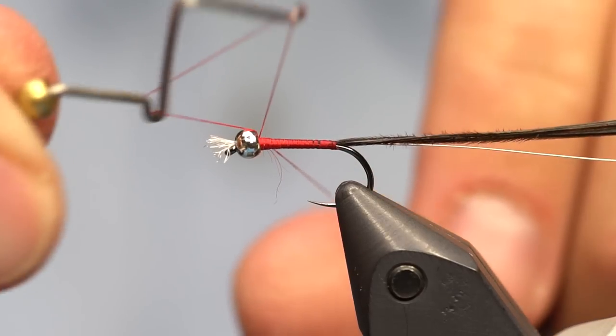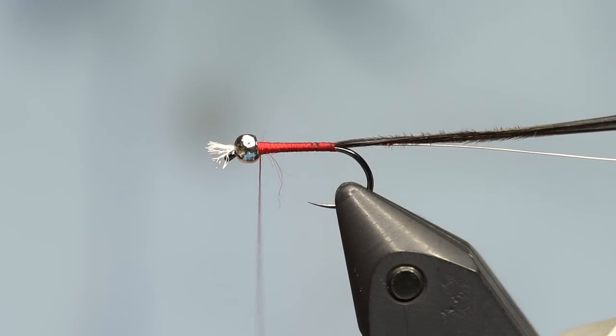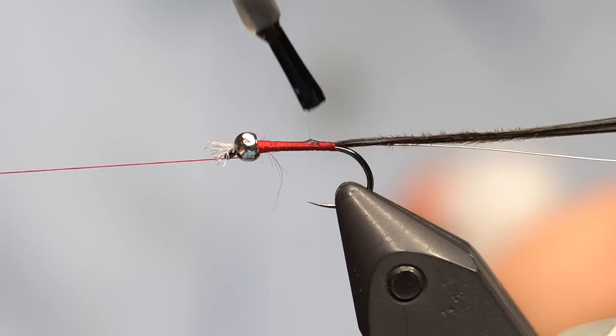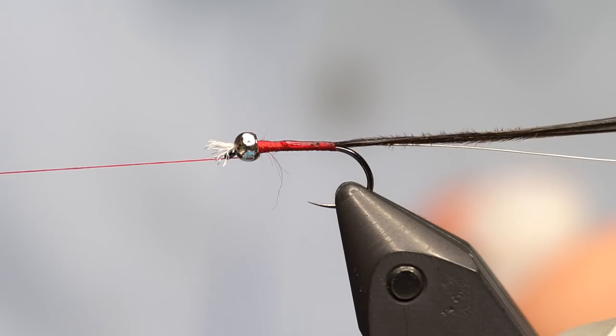I'm just going to throw a quick whip finish in here to hold it in place. I'm going to use the bobbin cradle on the rotary vise. The next step is to use some super glue, some Zap brush-on, or any super glue really will work great. Just put a little bit on the shank.